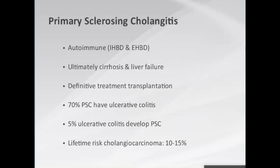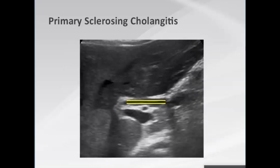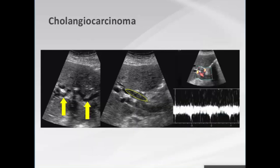Primary sclerosing cholangitis (PSC) is autoimmune, can affect intra- and extrahepatic bile ducts, and ultimately leads to cirrhosis and liver failure; definitive treatment is liver transplantation. Remember that 70% of patients with PSC have ulcerative colitis, and 5% of patients with ulcerative colitis will develop PSC. Having PSC carries a lifetime risk of cholangiocarcinoma of 10 to 15%. A typical appearance shows smooth, long-segment thickening of the wall of the common duct; skip lesions and associated segmental biliary dilation can occur. These patients come for screening ultrasound to detect developing cholangiocarcinoma.